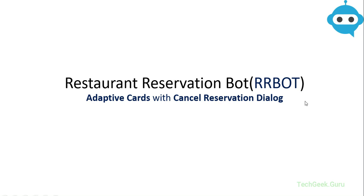Hello and welcome back. In the previous session we saw how we can use state management objects and property accessors created under them to manage end of dialogue and dialogue state. We also created property accessors with key-value pairs to track the previous topic, and then we tested our bot using the emulator.